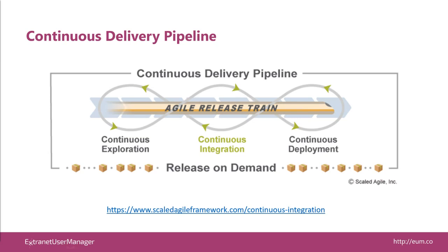I wanted to start by defining what continuous delivery is and what a continuous delivery pipeline is. Scaled Agile Framework is one that bubbled up to the top of my results and does a good job of explaining it. It's really part of the lean and agile methodology — this idea of dividing your work up into sprints, typically two weeks for us, sometimes three. Starting with sprint planning, getting business owners and the technical team together to prioritize the product backlog and figure out how much we can achieve in a sprint, then going through a continuous development phase.